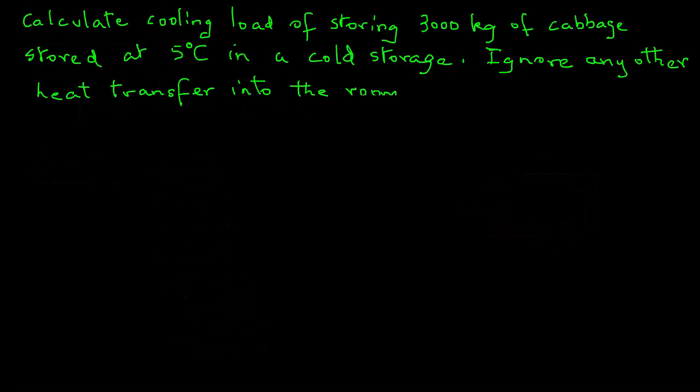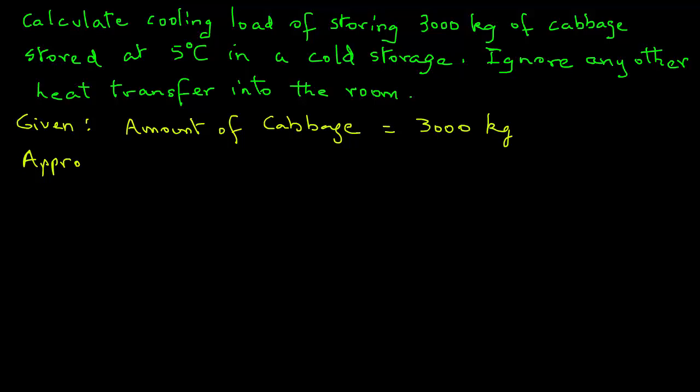We have an example here where we want to calculate the cooling load of storing 3000 kilograms of cabbage at 5 degrees Celsius in this cold storage room. We are going to ignore any other heat transfer into the room for this particular calculation. We are given the amount of cabbage as 3000 kilograms, and we will need to determine the value of heat evolution, that is, the heat of respiration of cabbage at 5 degrees C.